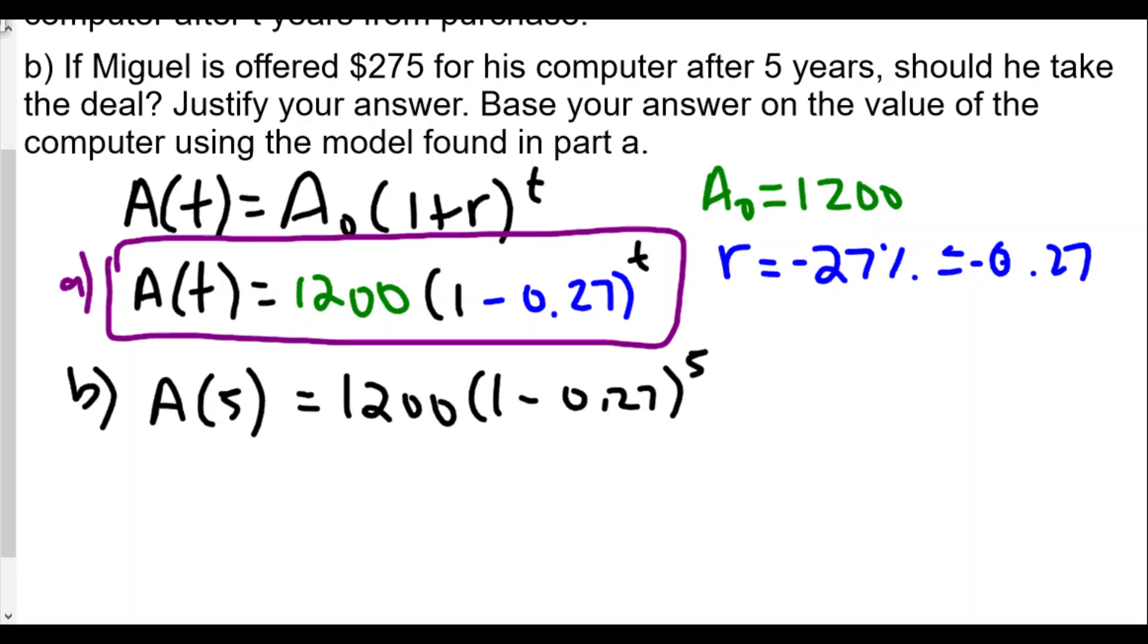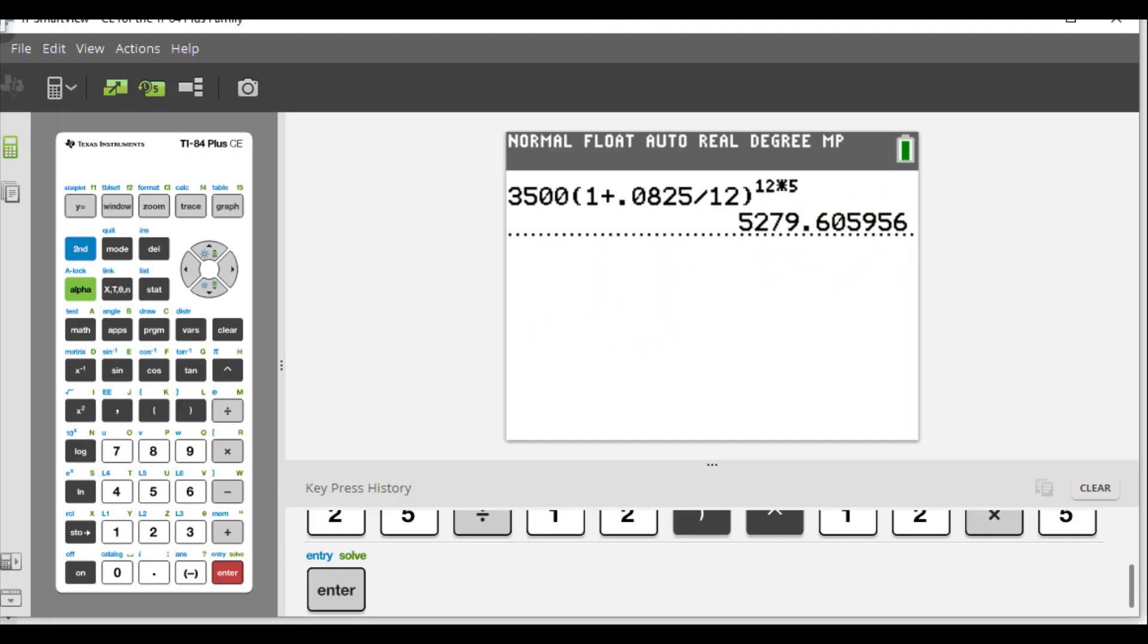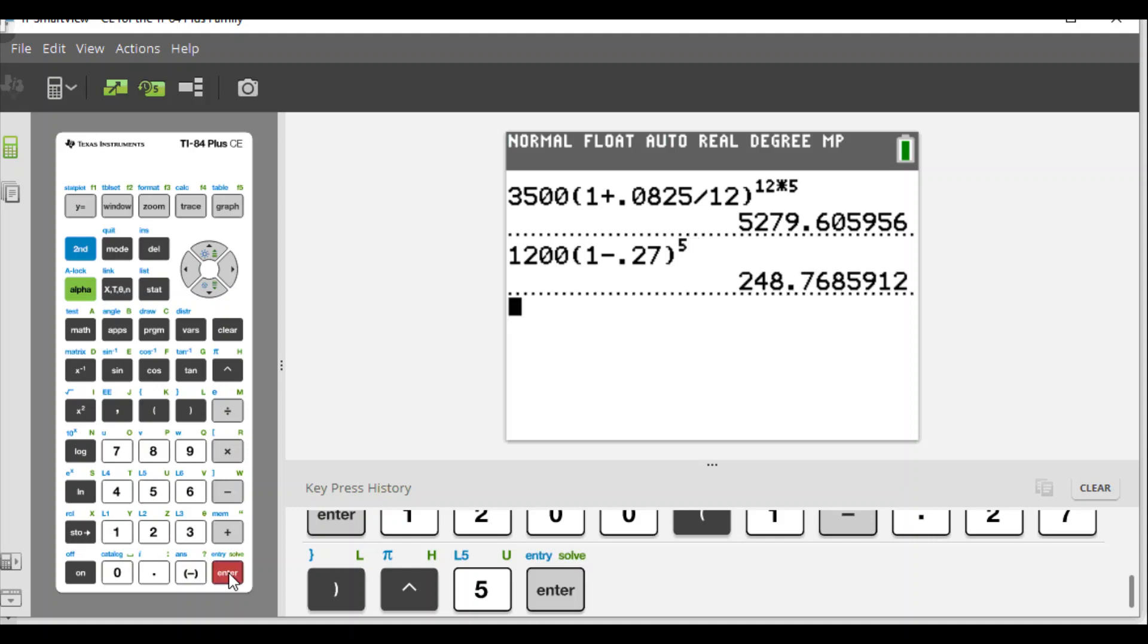Let's take a look. We have 1200 times (1 minus 0.27), close parenthesis, raise this to the fifth power to find the value of the computer after five years. It should go down because the rate is a negative value.